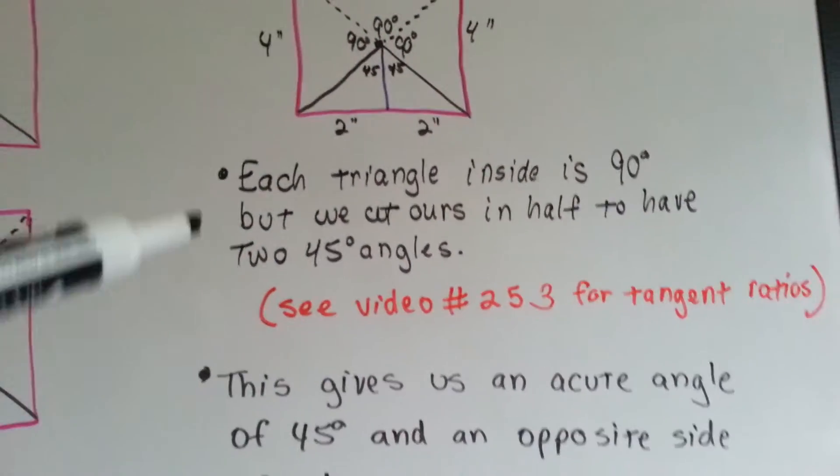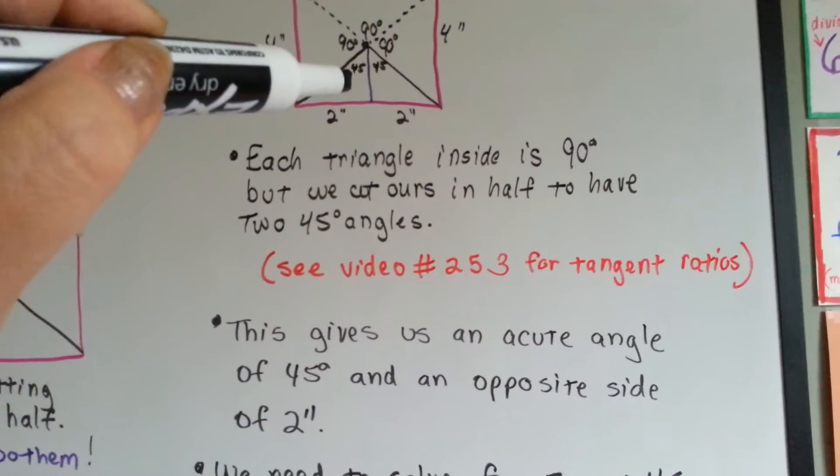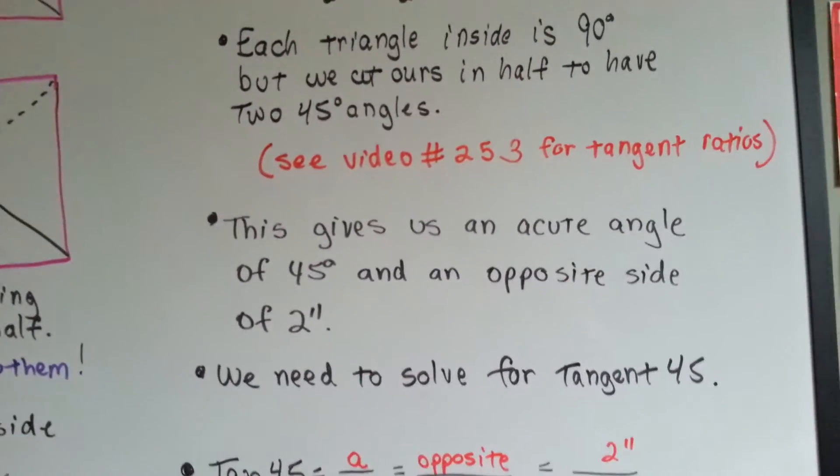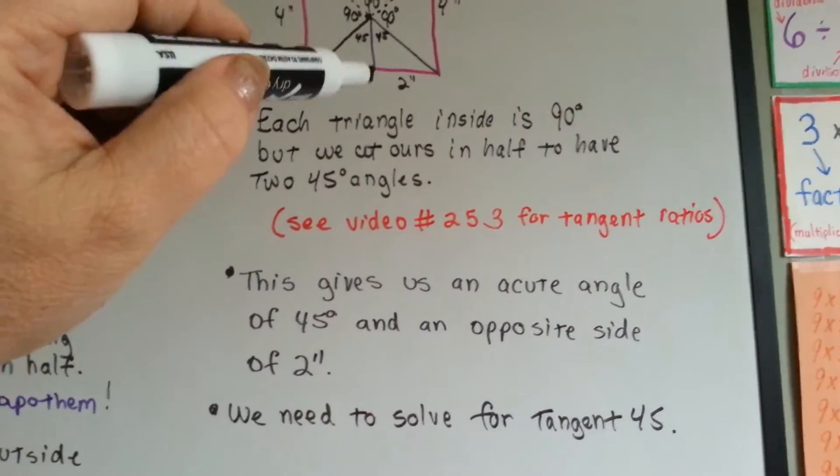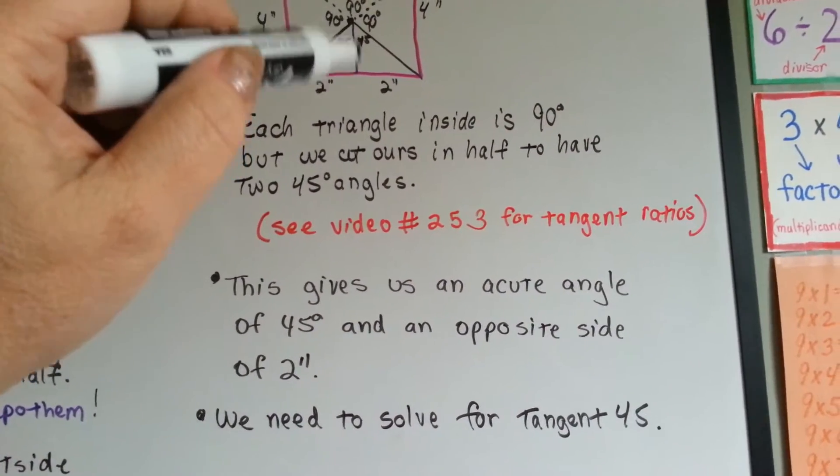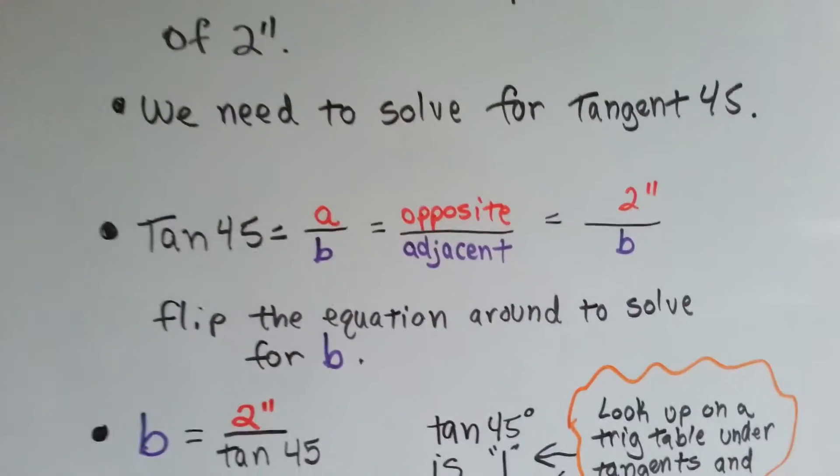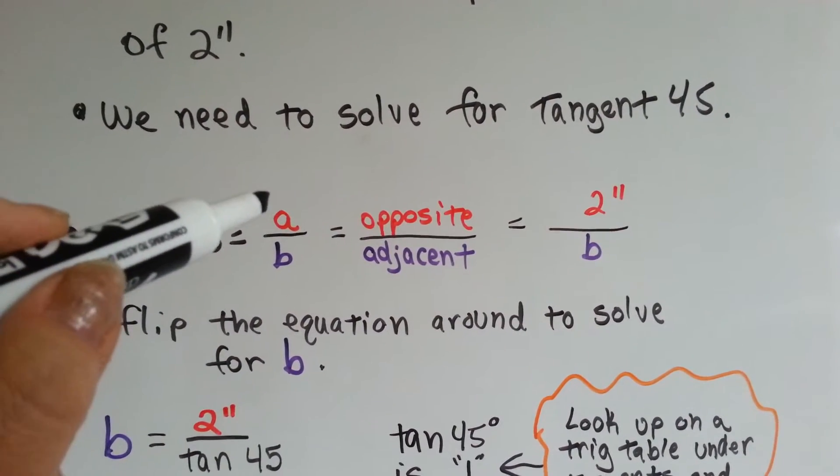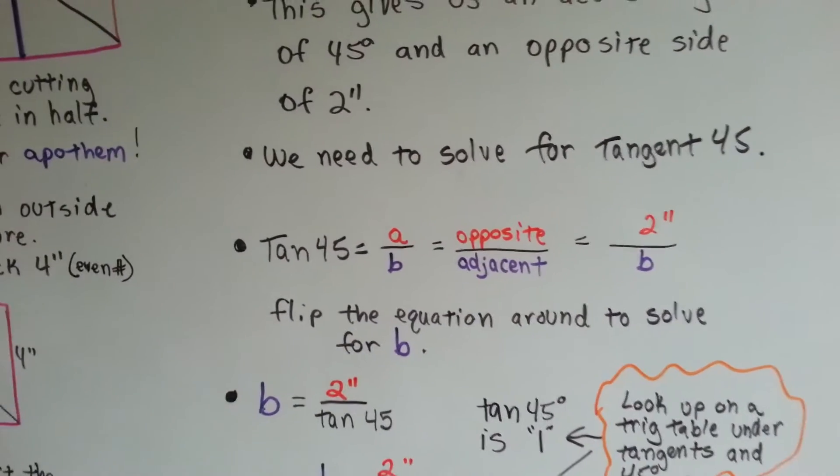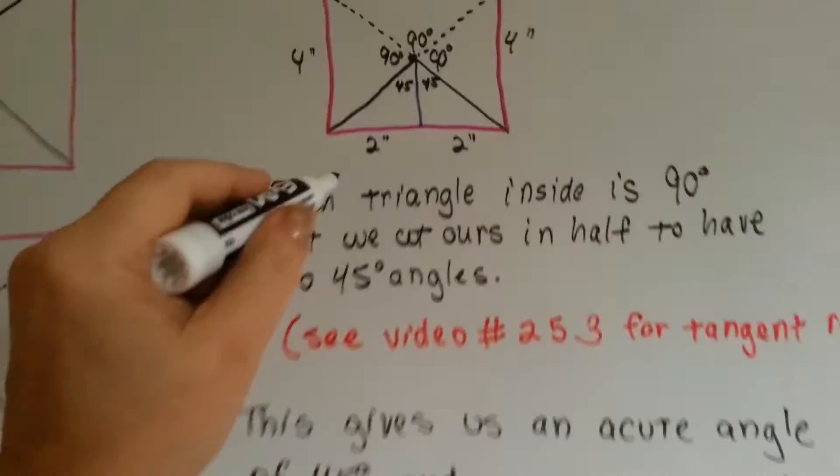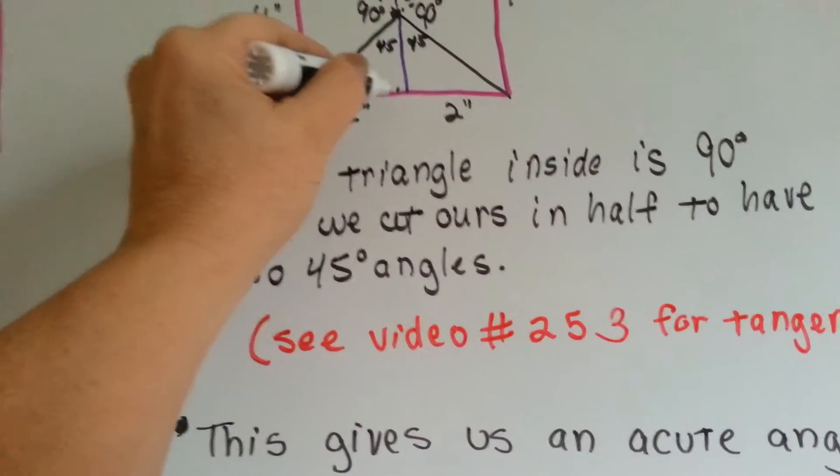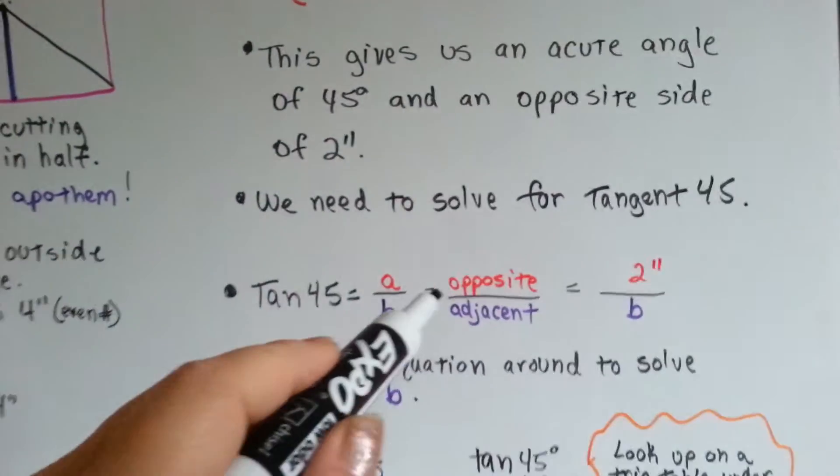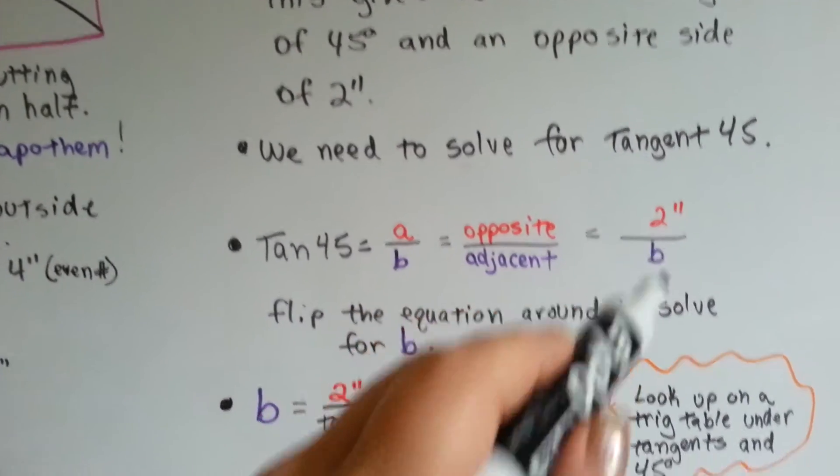So, this gives us an acute angle of 45 degrees right there, and it gives us an opposite side of 2 inches right there. We need to solve for tangent 45. We need to solve for this line, the apothem, which is our adjacent side. So, to solve it for tangent 45, remember that it is A over B. And if you noticed, I've used color coding. So, this is A right here, and it's going to be over the purple. So, it's opposite over the adjacent. So, it's 2 inches over B.